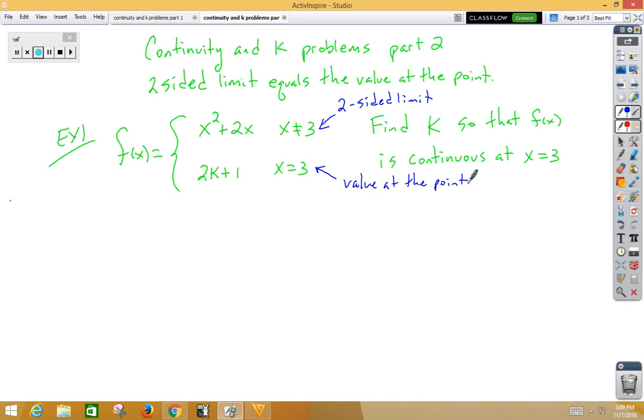So as we set this problem up, we're going to do the limit as x approaches 3, the two-sided limit of x squared plus 2x is equal to the value at the point, the y value, which is 2k plus 1. On the left side, the first thing we always try with limits is plugging in. So if we plug in, we get 9 plus 6 is equal to 2k plus 1. So 15 is 2k plus 1.